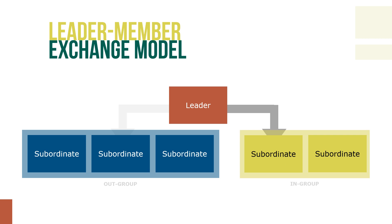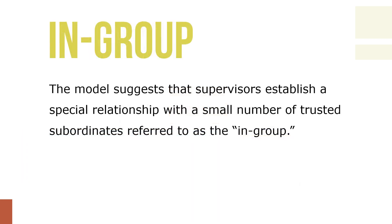This figure shows the basic concepts of the leader-member exchange theory. The model suggests that supervisors establish a special relationship with a small number of trusted subordinates, referred to as the in-group. The in-group often receives special duties requiring more responsibility and autonomy, as well as special privileges such as more discretion about work schedules. Members of the in-group are also likely to be privy to sensitive information and in the know about upcoming events before others. They may also receive more rewards and generally stronger support from the leader.